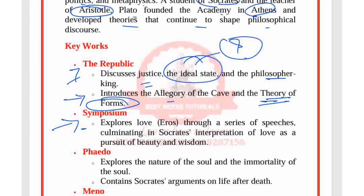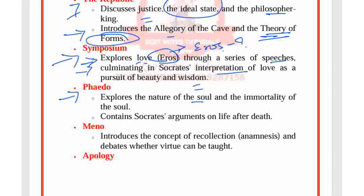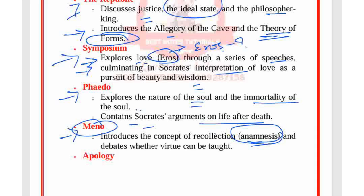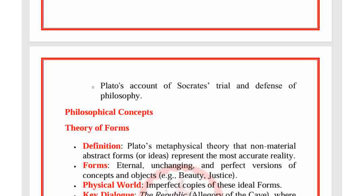Phaedo explores the nature of the soul and its immortality, containing Socrates' arguments on life after death. Meno introduces the concept of recollection — anamnesis — and debates whether virtue can be taught. The Apology is Plato's account of Socrates' trial and his defense of philosophy.